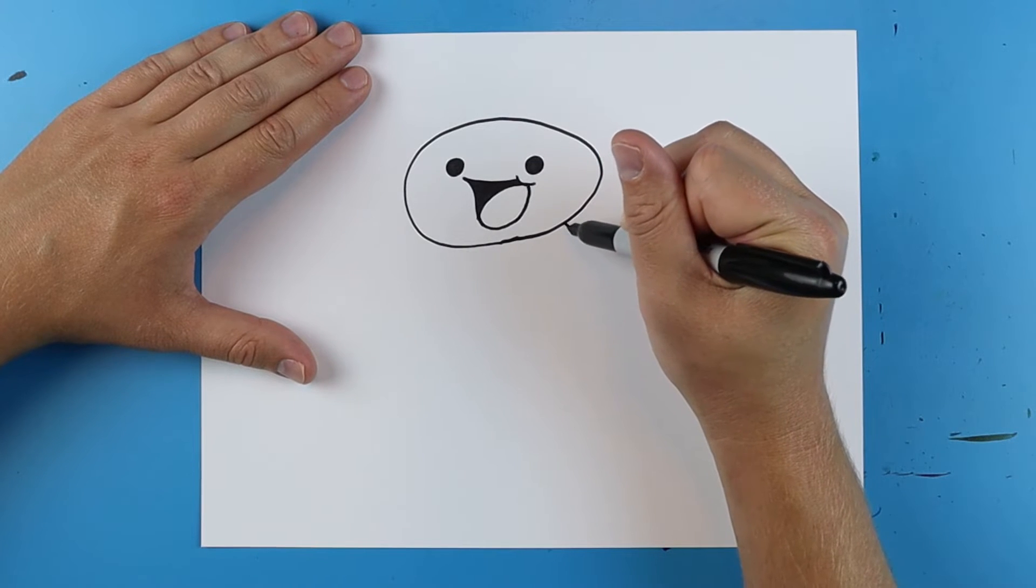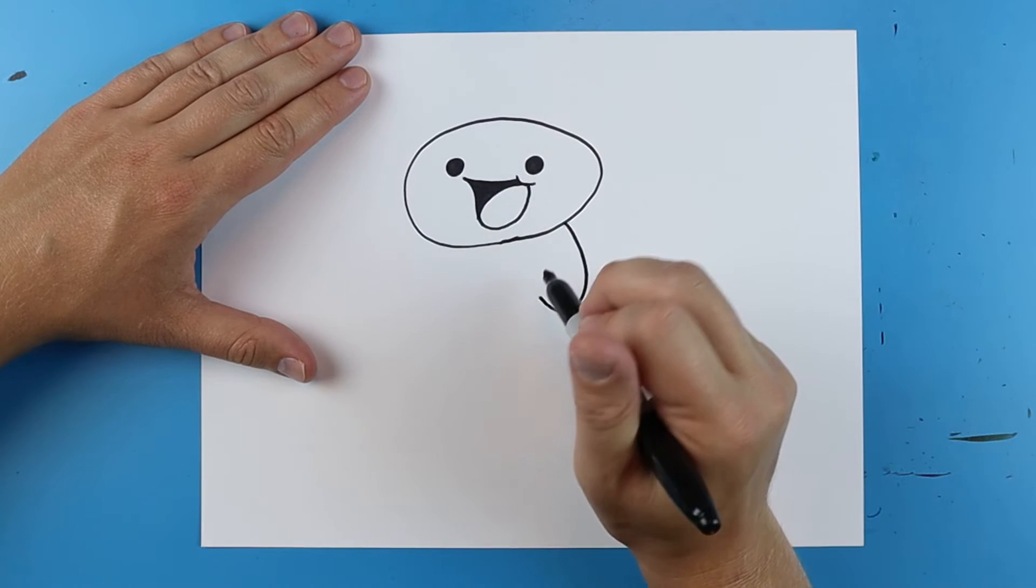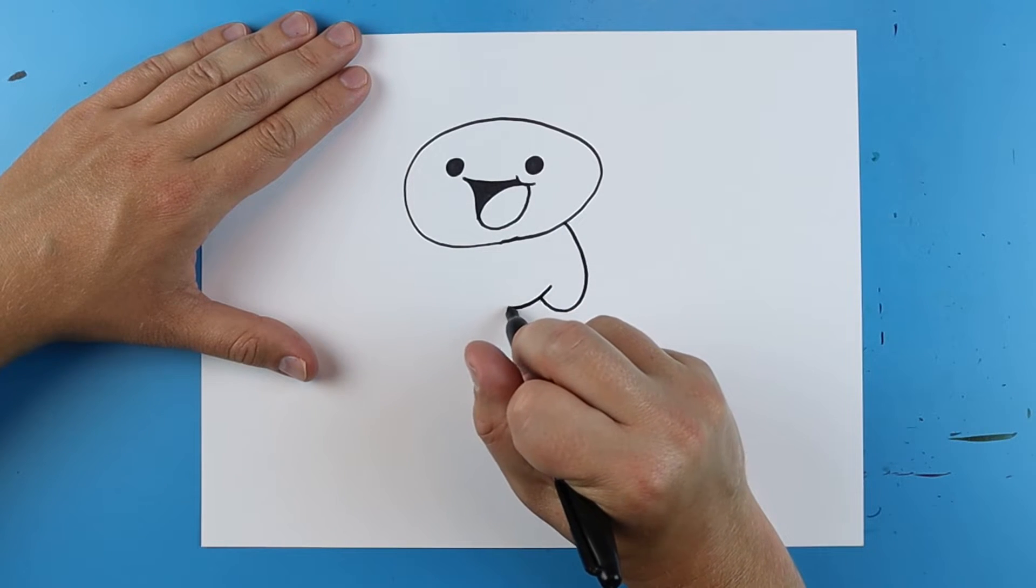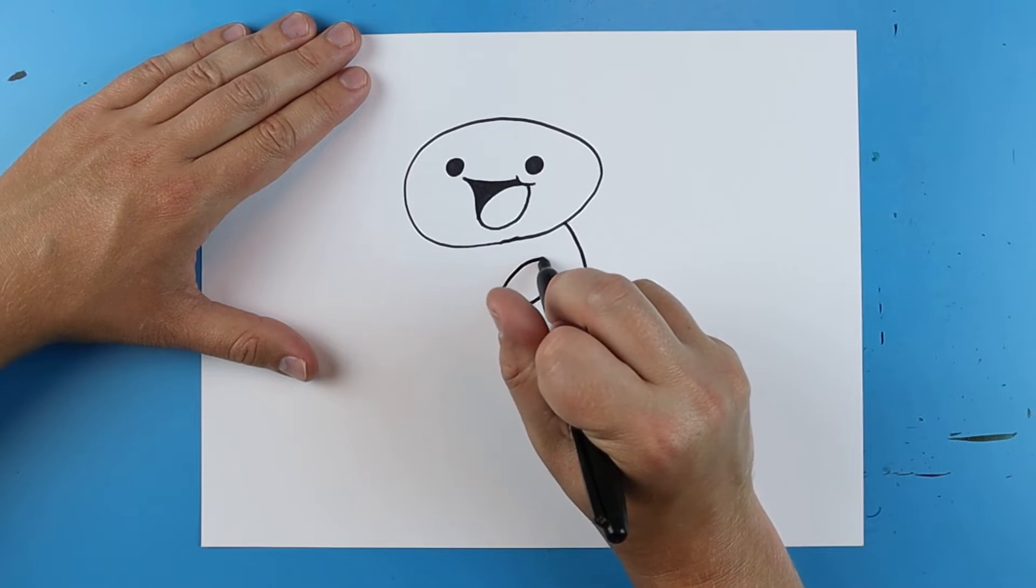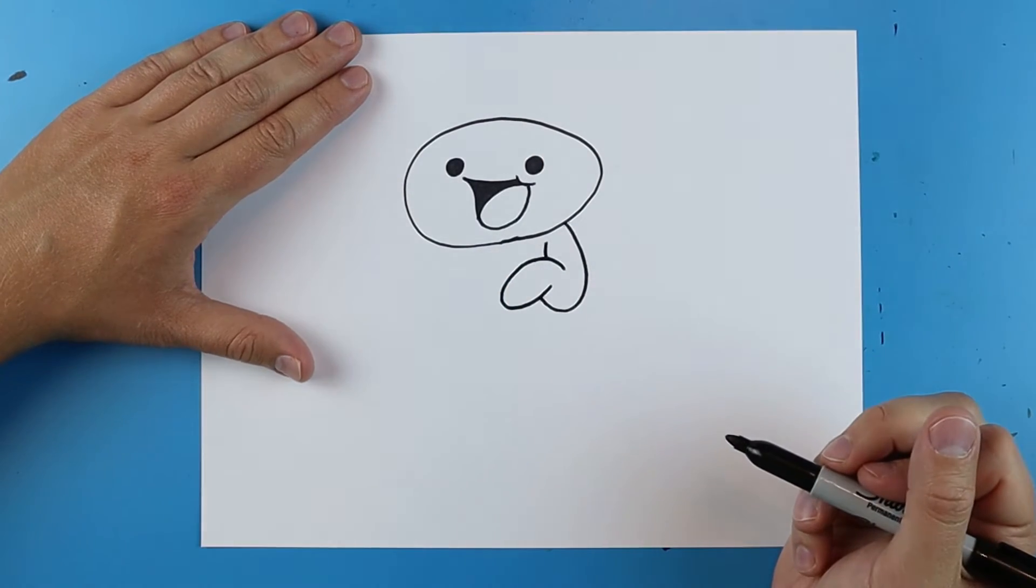Now starting here, we're just going to draw a line that's just going to curve down and up. And then a little line right here that just kind of curves around and comes down for the hands. And then a little line right there for the arm.